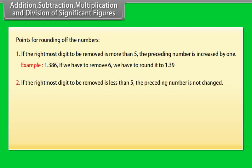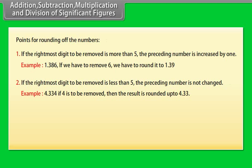2. If the rightmost digit to be removed is less than 5, the preceding number is not changed. Example: 4.334. If 4 is to be removed, then the result is rounded up to 4.33.